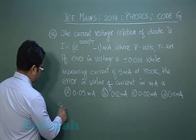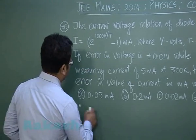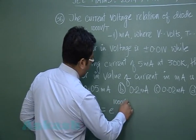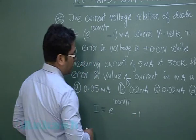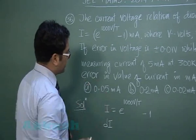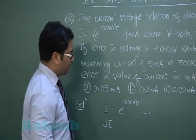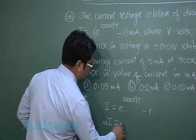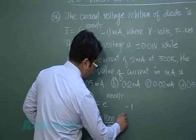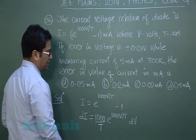This is not a regular question — a slight bit of calculus must be applied. Starting with I = e^(1000V/T) − 1, we differentiate: dI = (1000/T) × e^(1000V/T) × dV, where T is constant. The derivative is with respect to voltage, giving dV.